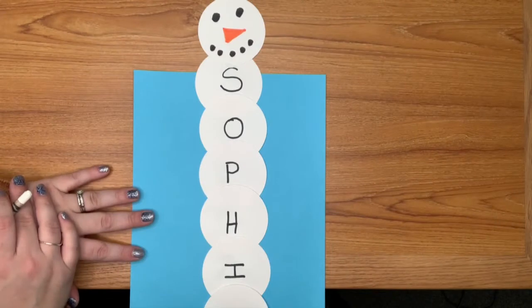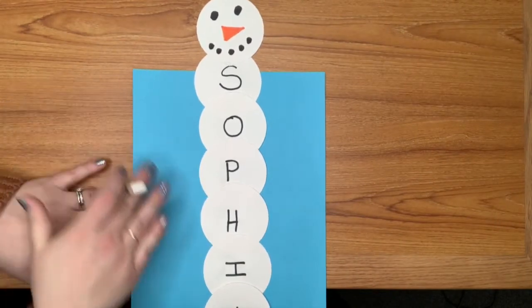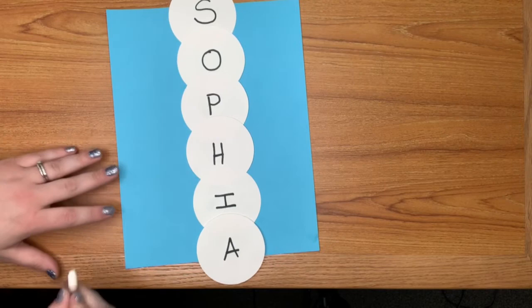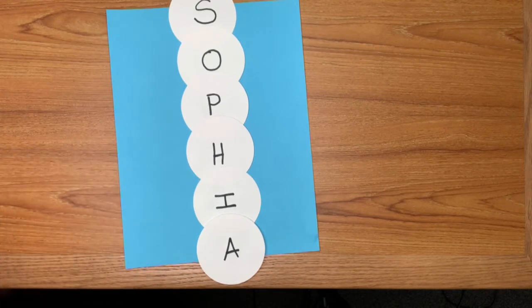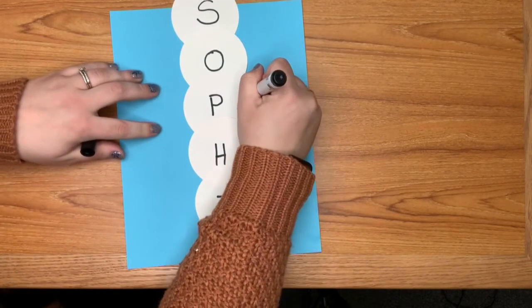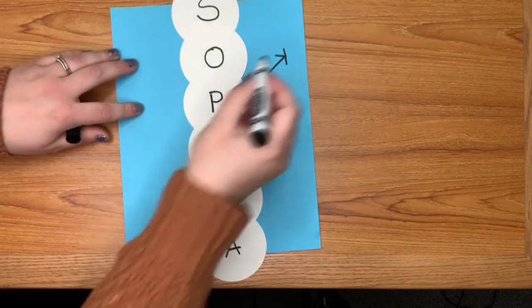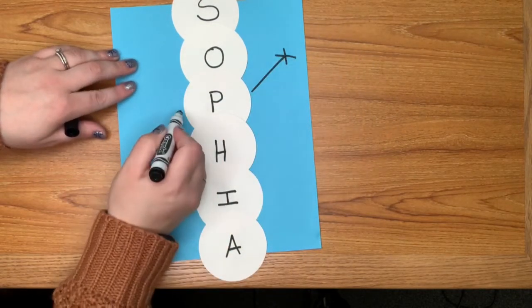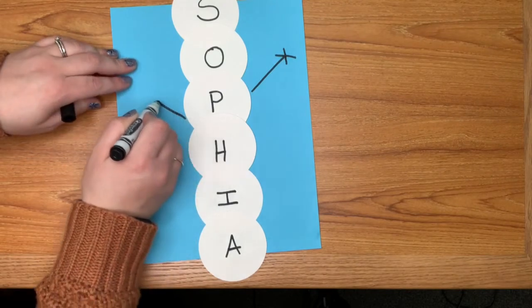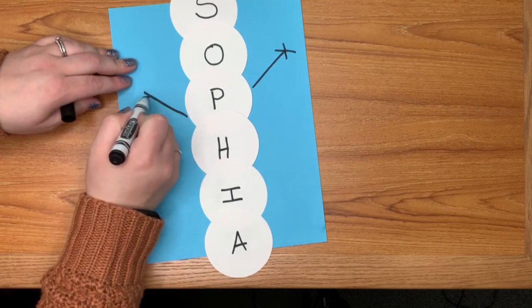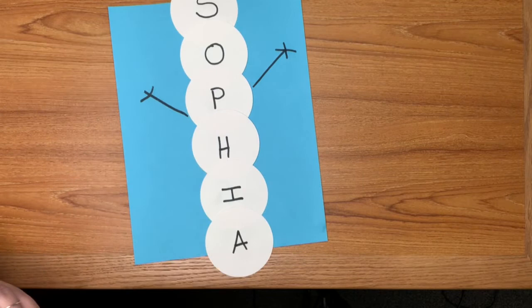Another thing that you can do once your name is all on your snowman body is you can add some arms. So I'm going to go like this because he's got a long body like that.